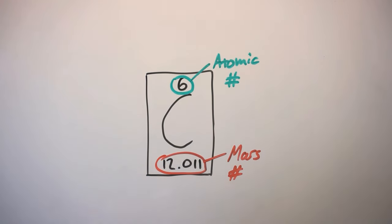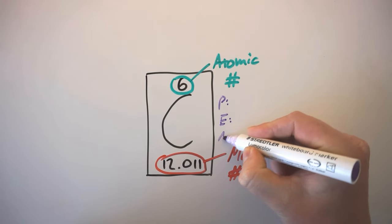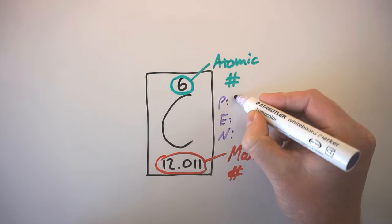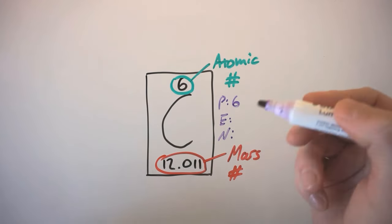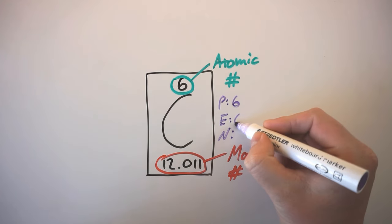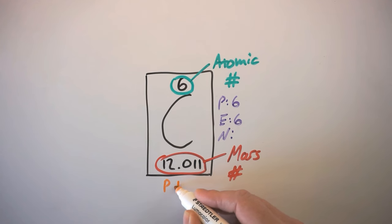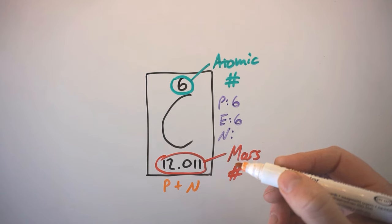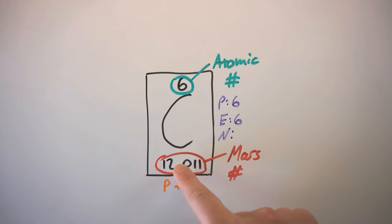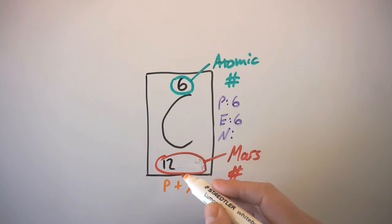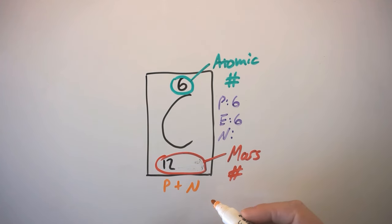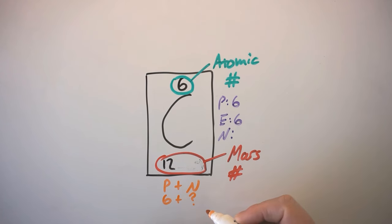These two numbers tell us how many protons, electrons and neutrons each carbon atom has. The atomic number tells us there are six protons. And since atoms have to be neutral, if there are six positive protons, there must be six negative electrons in every carbon atom. The mass number is the protons and neutrons added together. We give protons and neutrons each a mass of one, and we round the mass number to the nearest whole number, which is 12. So 12 is our protons and neutrons added together. We already know there are six protons, so there must be six neutrons in every carbon nucleus.